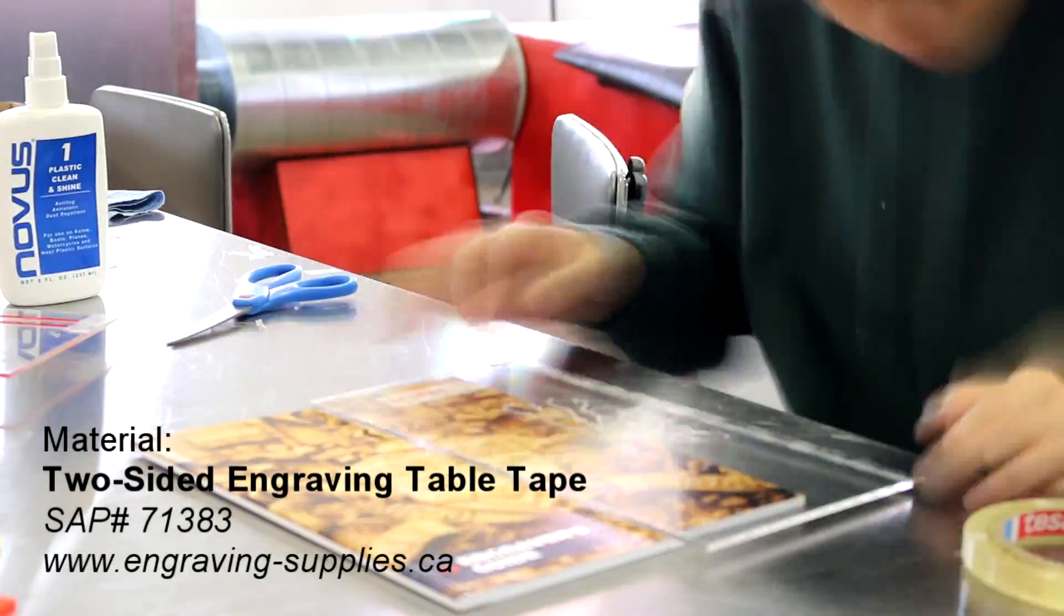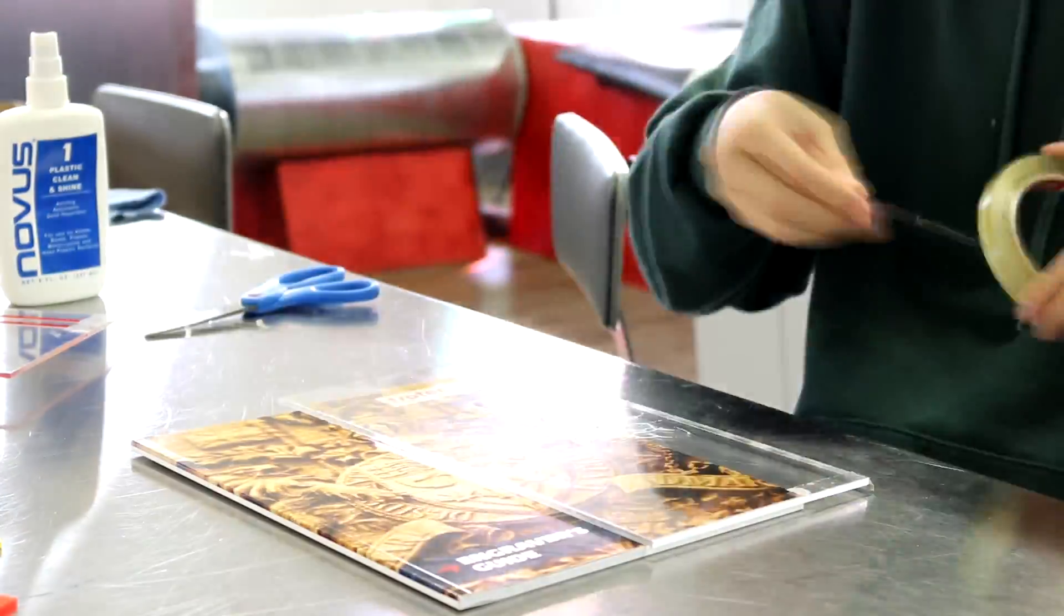I glued all my sheets together using double-sided tape. I also made a base frame out of the red acrylic.